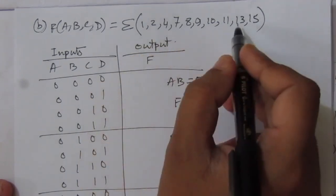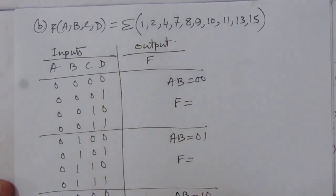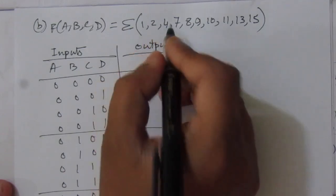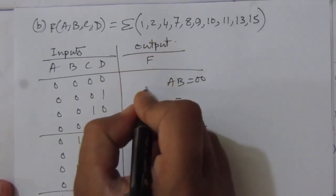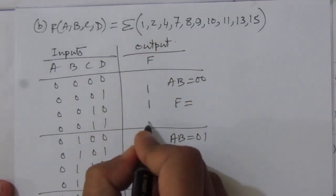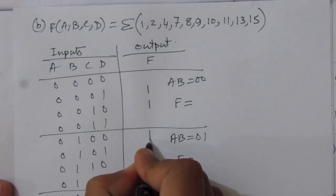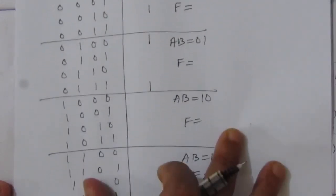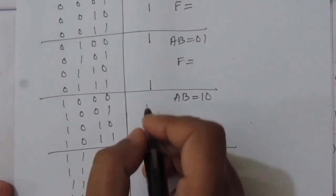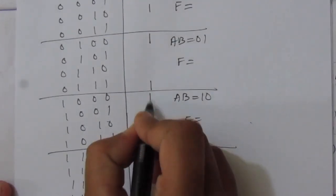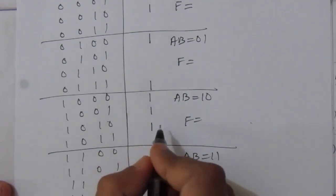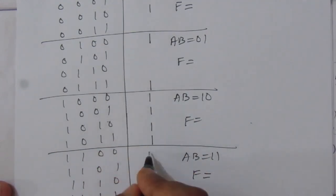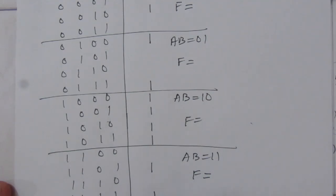Now let us fill out the sum of minterms expression in the output. Whatever terms are present — 1, 2, 4, 7, 8, 9, 10, 11, 13, 15 — those will be 1 at the output. The remaining values — minterms 0, 3, 5, 6, 12, 14 — will be 0.